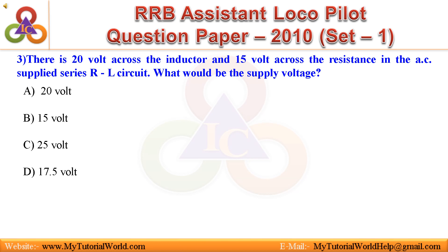Question 3: There is 20 V across the inductor and 15 V across the resistance in an AC supplied series R-L circuit. What would be the supply voltage? A. 20 V, B. 15 V, C. 25 V, D. 17.5 V. Answer is 25 V.